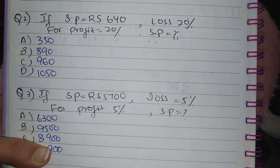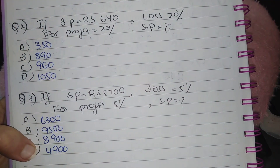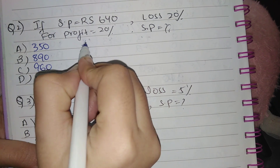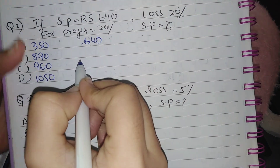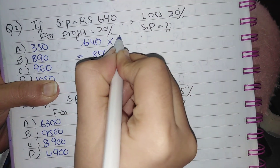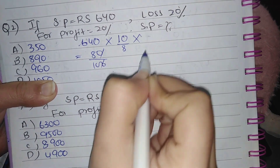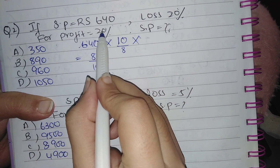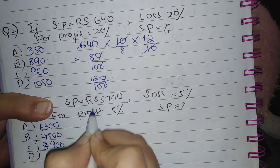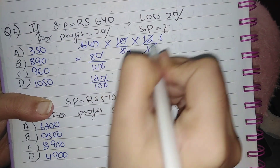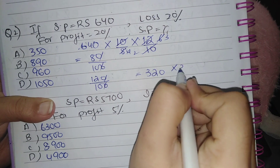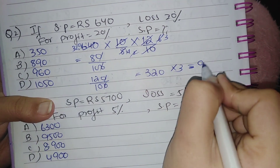Question number two: if selling price is rupees 640 and loss percent is 20 percent, find the selling price for 20 percent profit. First write the selling price: 640. Loss is 20 percent, so 100 minus 20 is 80 percent, which is 80 by 100, simplified to 8 by 10. Write the reciprocal: 10 by 8. Multiply by profit percent: 100 plus 20 is 120, so 120 by 100 is 12 by 10. The 10s cancel out, giving 320 multiplied by 3, which equals 960. Option C is correct.